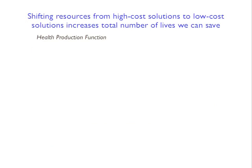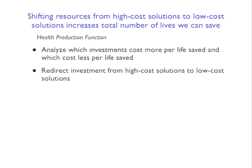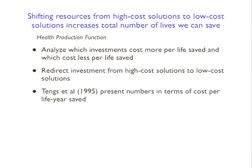Analyzing which investments cost more per life saved and which cost less is useful, and that's what the paper on the syllabus does. This is essentially a meta-analysis - the authors aren't getting their own data but are going to the library and looking up hundreds of studies on this topic to figure out what different types of interventions cost in terms of dollars per life saved. The authors present numbers in terms of cost per life-year saved rather than per life saved.